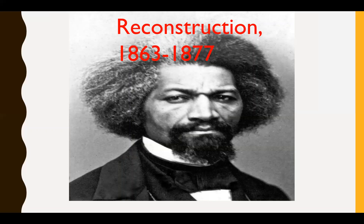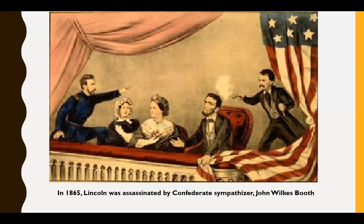Congress thought Lincoln's plan was too lenient and put in place the Wade Davis Bill. This bill required an oath of allegiance by a majority of each state's adult white men, and new governments in the South could only be formed by those who had never taken up arms against the Union. Ex-Confederate leaders were disenfranchised — they could not vote. Lincoln thought this was too harsh and vetoed the Wade Davis Bill.